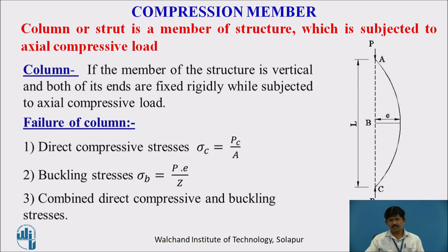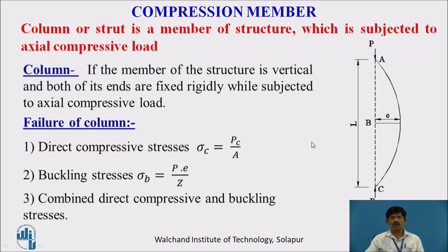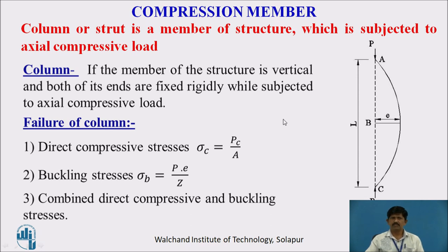A compression member is a member of a structure which is subjected to axial compressive load. A column is a structure which is vertical and both its ends are fixed rigidly while subjected to axial compressive load.